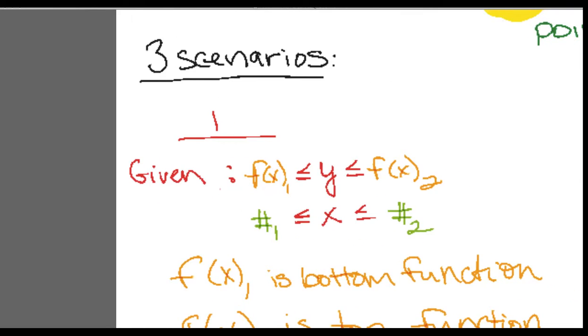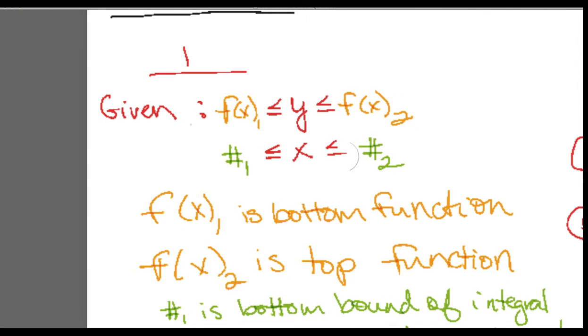So there are three main scenarios. One is a problem can be given to you like this. This is actually pretty straightforward. This is going to be your bottom function because the region, the area of y values we're looking at, it's going to be greater than this one, meaning that it's on the bottom but it's going to be smaller than the one on the right. So x1 on the left is going to be the bottom function and the right is going to be the top function.